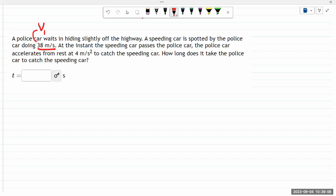At the instant the speeding car passes the police car, the police car accelerates from rest. So the police car will have initial speed of zero. And this is the acceleration of the police car to catch the speeding car.